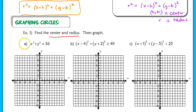Let's start with our first example: x squared plus y squared equals 36. Sometimes it trips up students because you don't see a 'minus something.' You can rewrite it as (x minus 0) squared plus (y minus 0) squared, and clearly the center is at (0, 0).